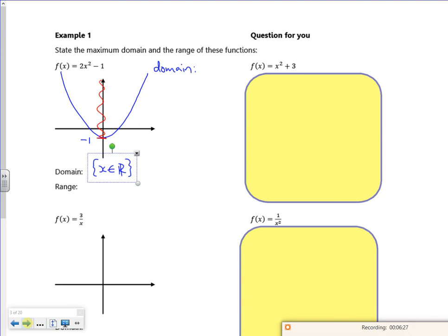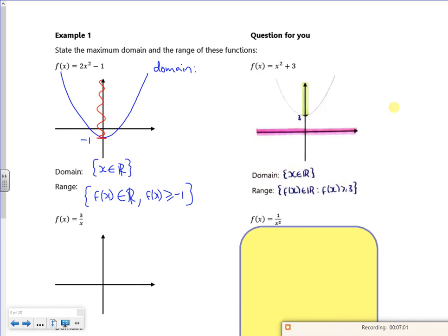In terms of its range, its range starts at minus 1 and it goes up. So f(x) is greater than or equal to minus 1, but it's also a real number. I want to say it's a real number as well, just for absolute clarity. So f(x) belongs to the real numbers such that f(x) is greater than or equal to minus 1. That covers it there. There's one for you to do for x² + 3.